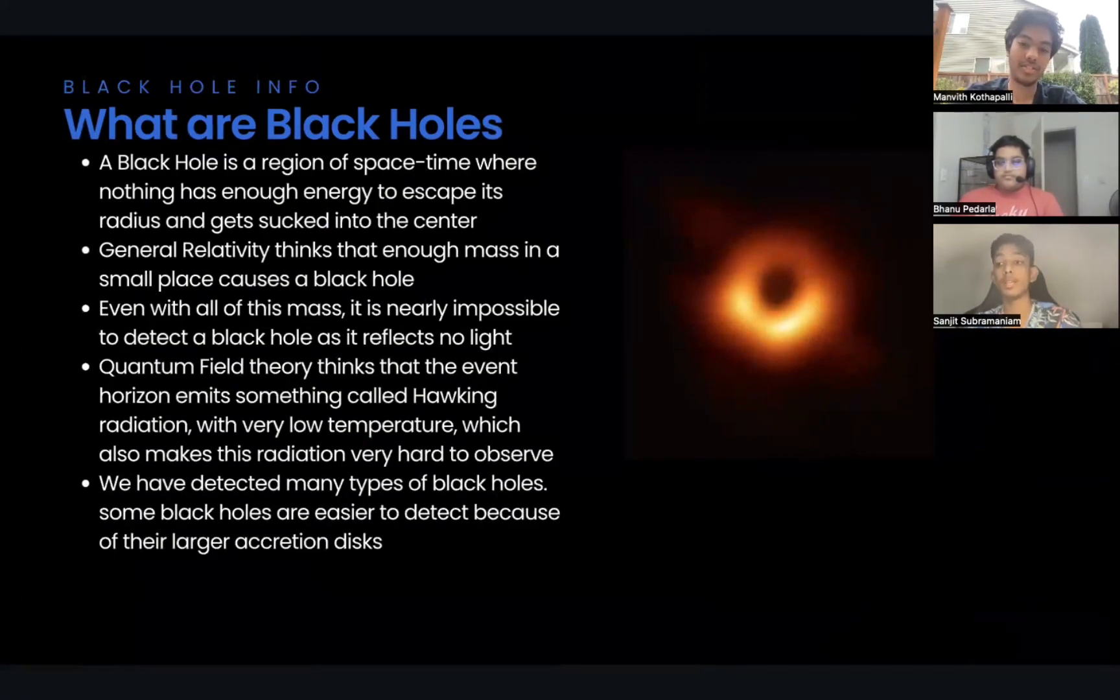So what are black holes? A black hole is a region of spacetime where nothing has enough energy to escape its radius and gets sucked into its center. General relativity thinks that enough mass in a small place causes a black hole, which deforms spacetime. Even with all this mass, it's nearly impossible to detect a black hole as it reflects no light. Quantum field theory thinks that the event horizon emits something called Hawking radiation, which is electromagnetic radiation due to the black hole capturing an antiparticle-particle pair due to Heisenberg's uncertainty, with very low temperature, which also makes this radiation very hard to detect. We've detected supermassive black holes, ultramassive black holes, intermediate and stellar-mass black holes. Supermassive and ultramassive black holes are relatively easy to detect because of their large accretion disks, but intermediate and stellar-mass black holes are hard to detect because they have very small or no accretion disks.